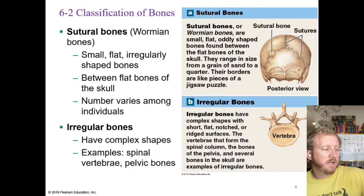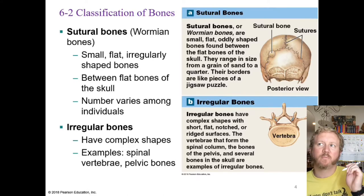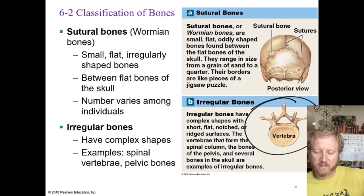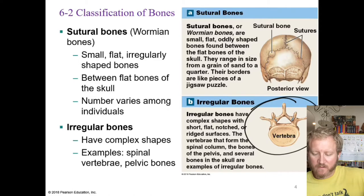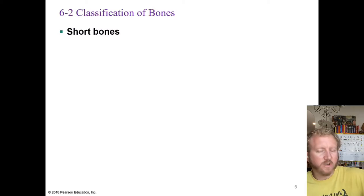Irregular bones have very complex shapes — they include the vertebrae and the pelvic bones. They don't have a regular shape; they have a lot of different processes, which are projections, foramina, which are openings, and fossae, which are flat areas. We'll use those words a lot going forward.